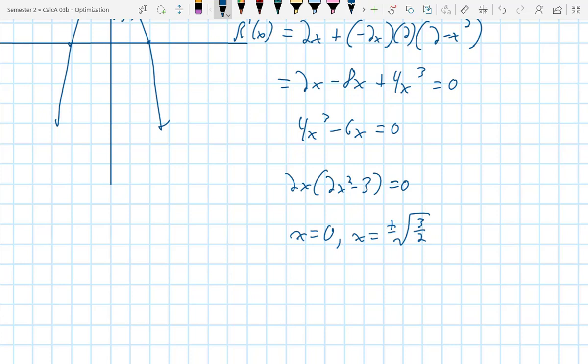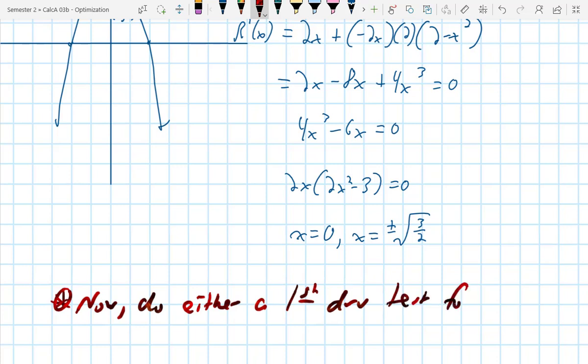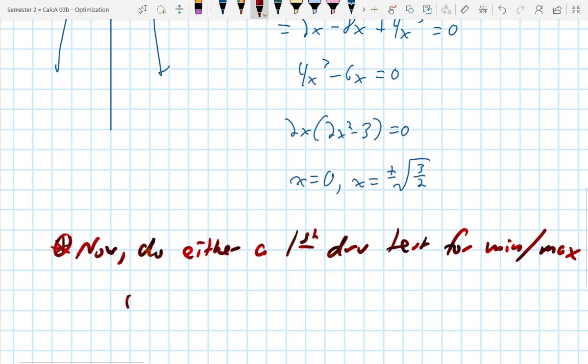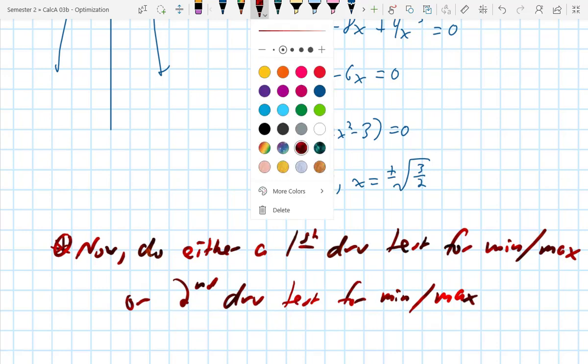What you now want to do is either do a sign test or do a second, sorry, let me rephrase it, do a first derivative test for mins and maxes, or a second derivative test for mins and maxes. I'm going to write that down here. So now, do either a first derivative test for min and maxes, or a second derivative test for min and maxes.